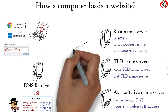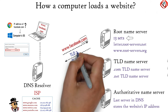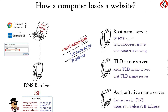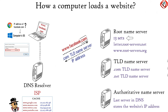DNS resolver checks its cache whether it has the IP address of the requested website. If not, the DNS query is forwarded to the root name servers. The root name server checks the extension of the website — whether it is .com, .org, .net, .in, etc. Based on the extension, the root name server provides the IP address of the TLD name server to the DNS resolver. In this case, the IP address of the .com TLD name server is provided to the DNS resolver, which then contacts the .com TLD name server, which provides the IP address of the authoritative name server that should necessarily store the IP address of the requested website.